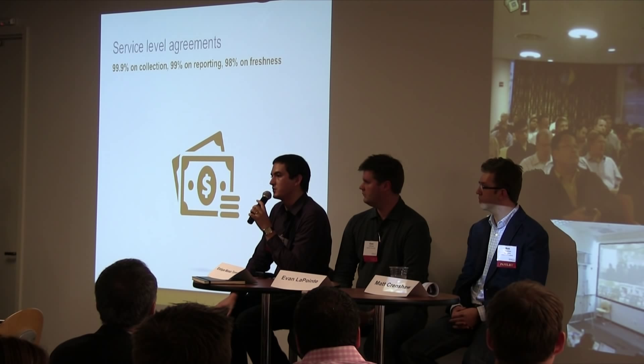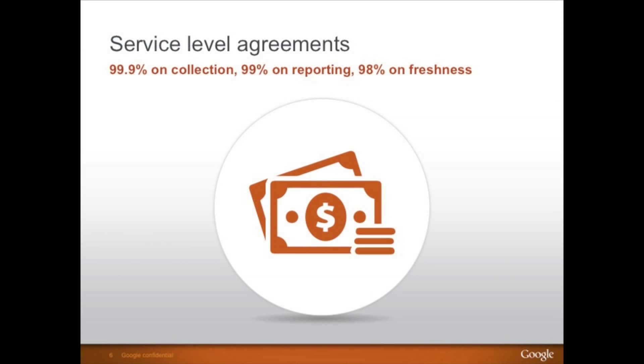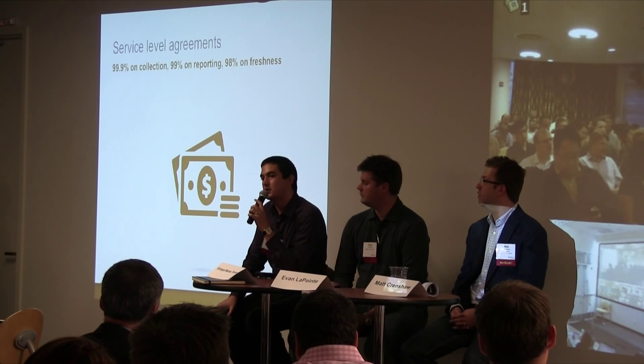Another important component is service level agreements. We want to have guarantees about how well the service is going to work, and we divide those into three components. The first is collection — when you send Google Analytics Premium a hit, we want to make sure that hit is going to be captured. We guarantee we're going to be collecting data 99.9% of the time, which means we can only allow ourselves not to be collecting data about 45 minutes every month. This is tremendously aggressive, even within the real enterprise, and we're happy to be able to offer this.